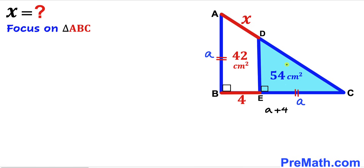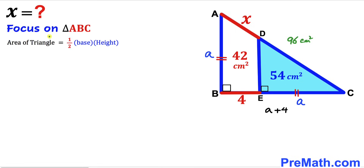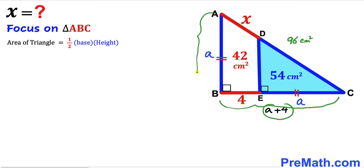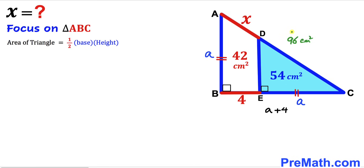Now let's focus on big right triangle ABC. The total area of triangle ABC is the sum of the two individual areas: 42 plus 54 gives us 96 square centimeters. Recalling the area formula — area equals one-half times base times height — the base of triangle ABC is a plus 4, the height is lowercase a, and the area is 96 square centimeters.